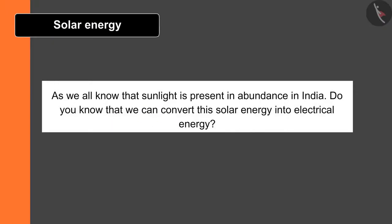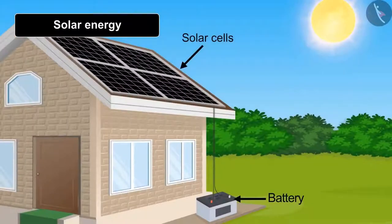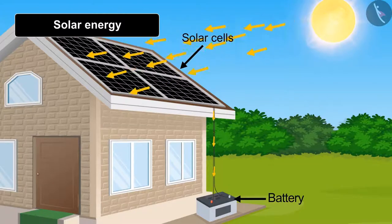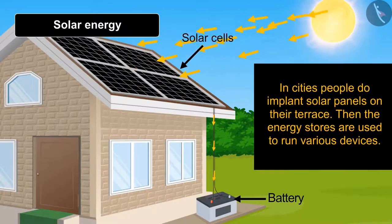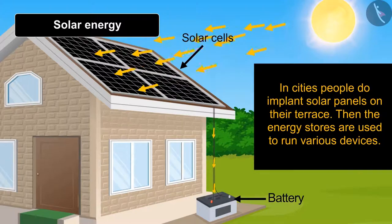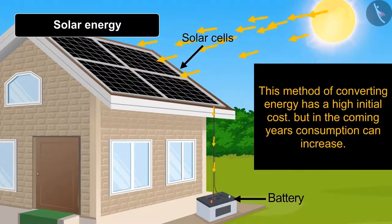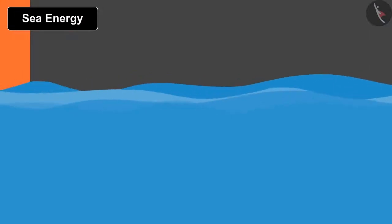As we all know, sunlight is present in abundance in India. We can convert solar energy into electrical energy. To do this, solar cells made of silicon are kept in sunlight; these cells help in collecting and storing energy in a battery for later use. In cities, people install solar panels on their terraces to run various devices. This method has a high initial cost, but consumption is expected to increase in coming years.